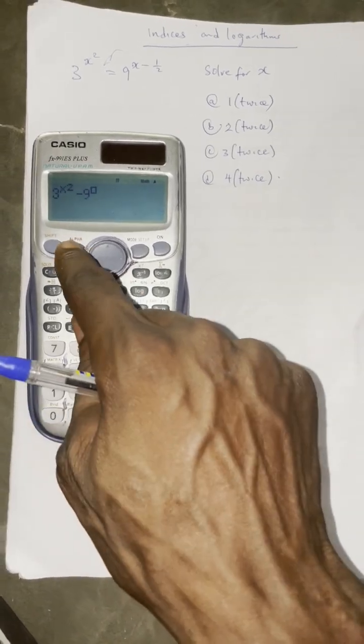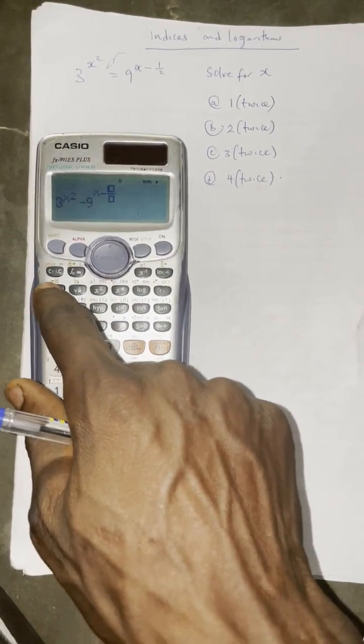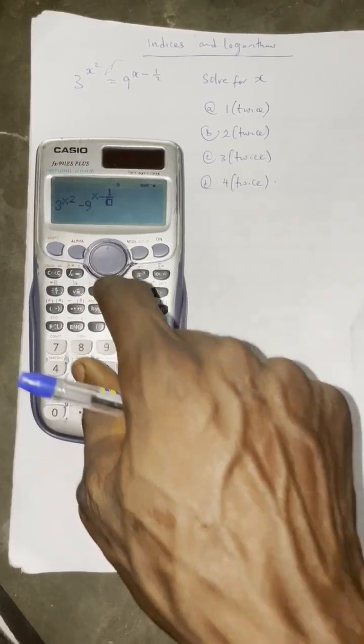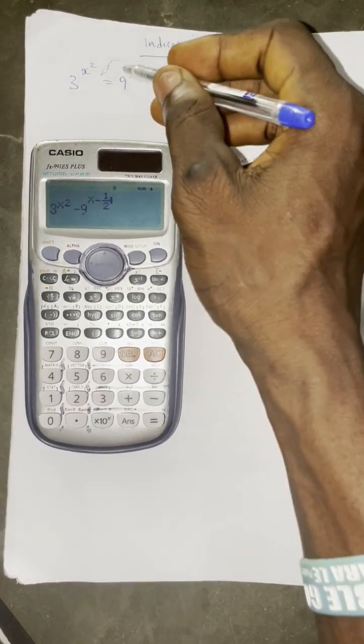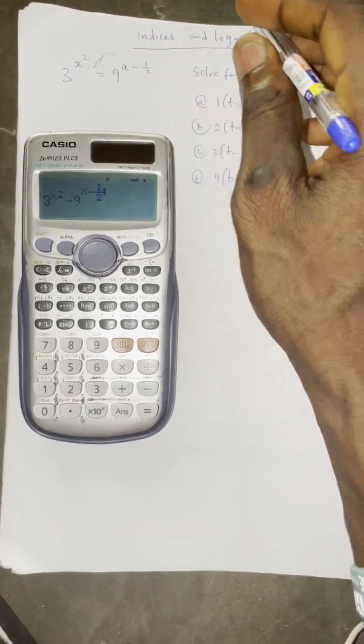Then raise to power alpha x. So press minus, then your fraction button, you have one over two equals. Now we'll be testing the options. Once you take the equation like this, everything equals zero, so the one that gives us zero is the answer.